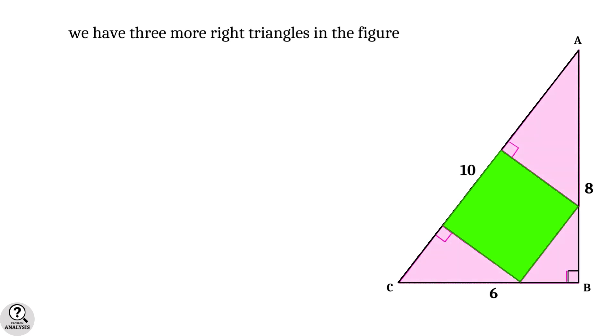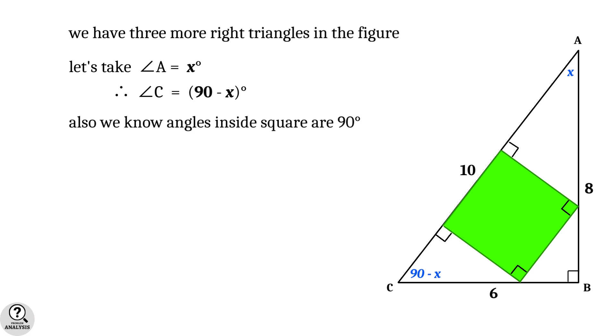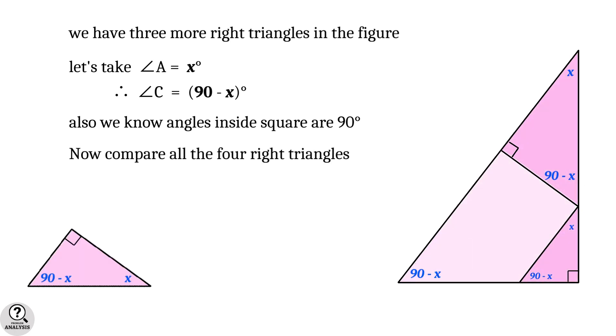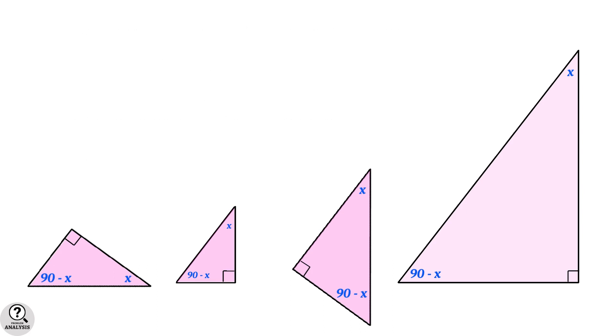Now let's take angle A equal to x degrees. Therefore, angle C will be 90 minus x degrees. Also, we know that the angles inside the square are 90 degrees each. Using this, calculate the remaining angles. Then we get like this.